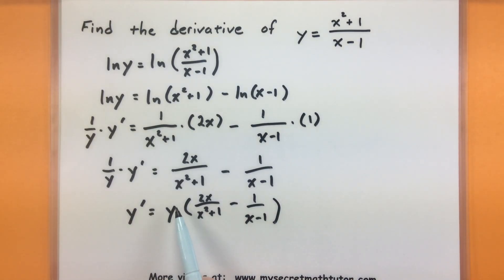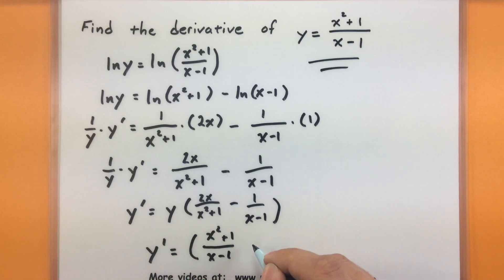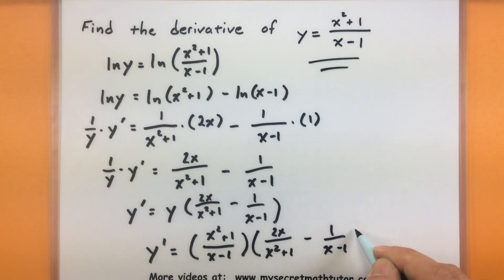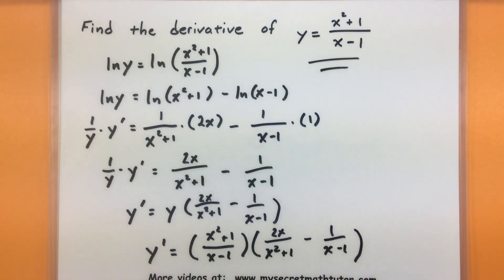And of course the very last step is I'm going to replace y with the original function. I know what it is, and then we'll have our derivative. So the original function was x squared plus 1 all divided by x minus 1. So all of that is now being multiplied by this. And we have our derivative. So make sure you're really up on your laws of logarithms. Make sure you know your rules for derivatives really well. And this can be a powerful tool to help you find derivatives of some really complicated and ugly looking functions. If you'd like to see some more videos, please visit MySecretMathTutor.com.